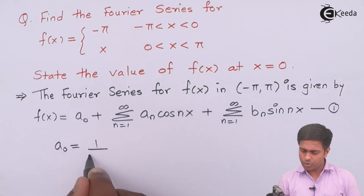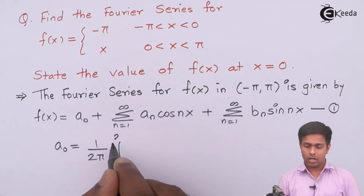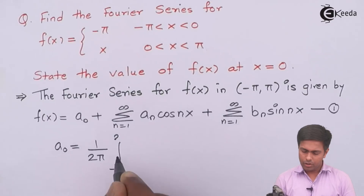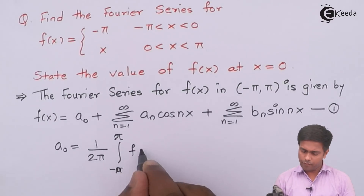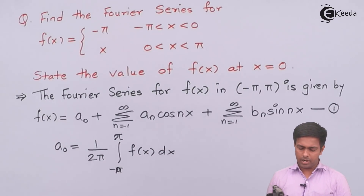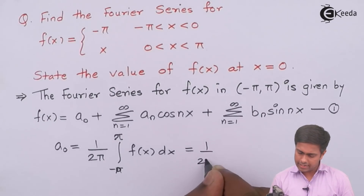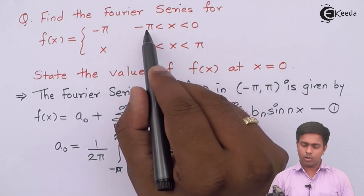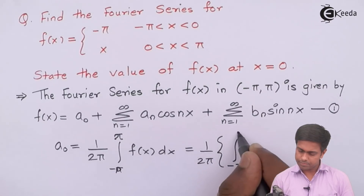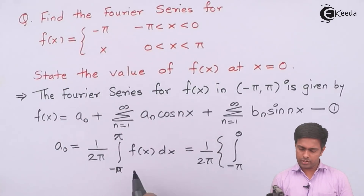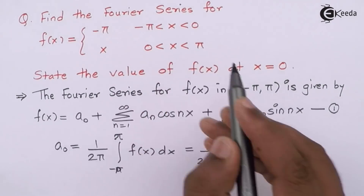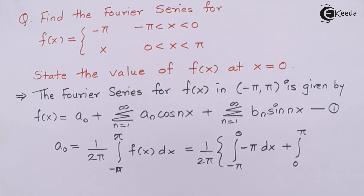To find a₀, the formula is 1 upon 2pi, integration from negative pi to pi of f(x) dx. Since the range negative pi to pi is divided into two parts, the first part is negative pi to 0 where f(x) is minus pi, and the second part is 0 to pi where f(x) is x. So we get: 1 upon 2pi times [integral from negative pi to 0 of (minus pi) dx + integral from 0 to pi of x dx].